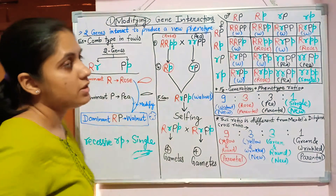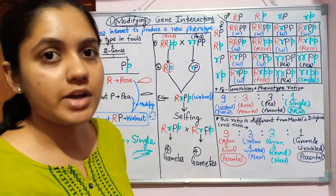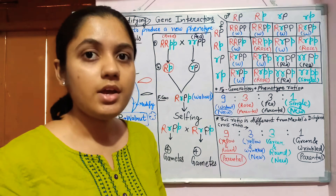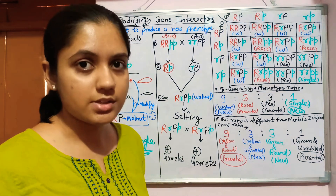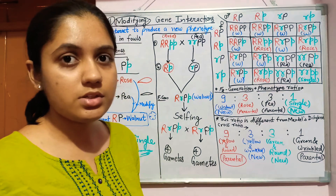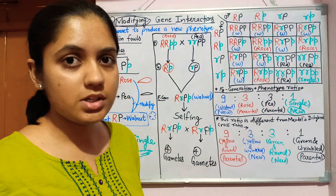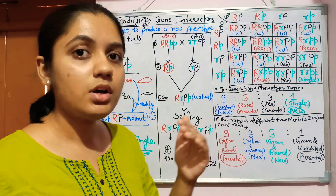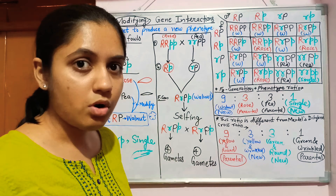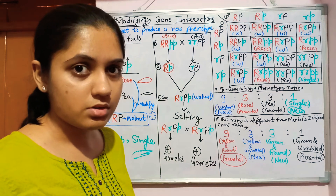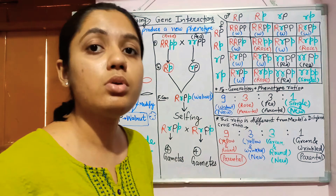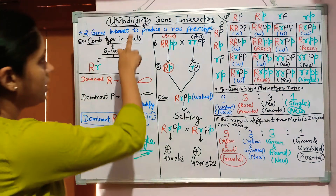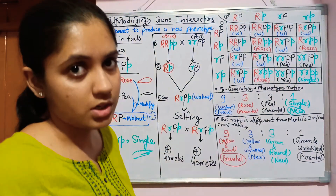This modifying gene interaction is a type of intergenic gene interaction. It is between two different genes. The alleles of these two different genes can be present on the same chromosome at different places, on different homologues, or on non-homologous chromosomes also.